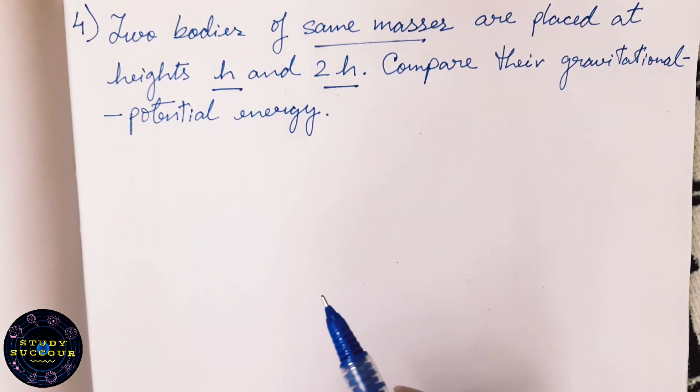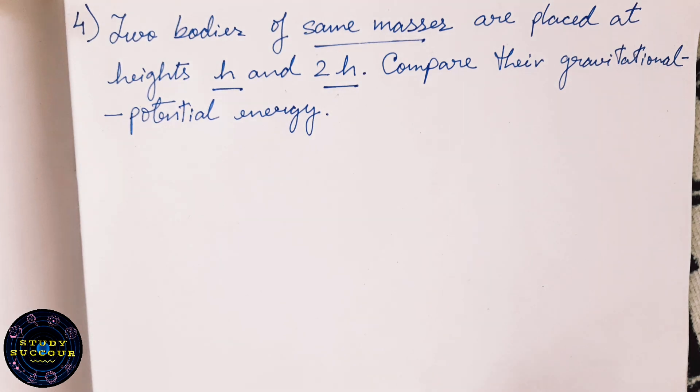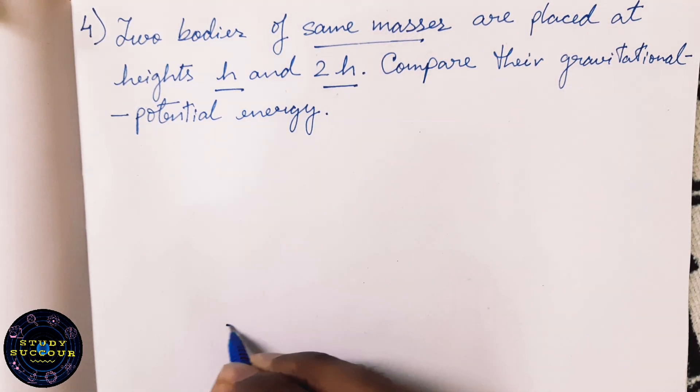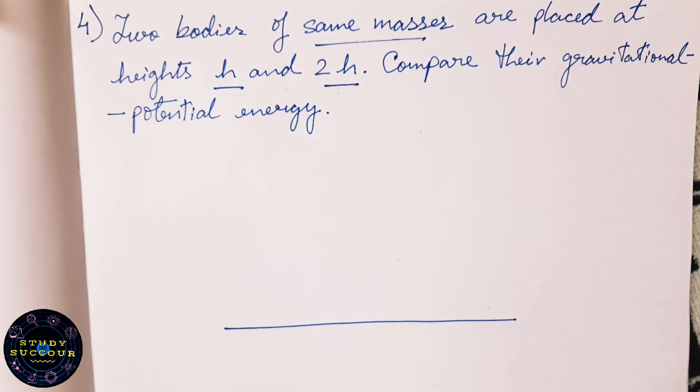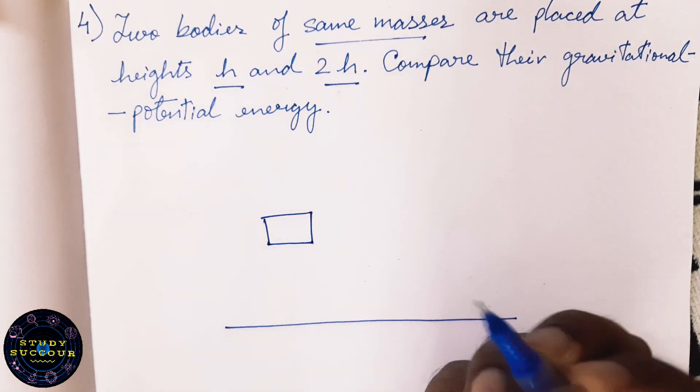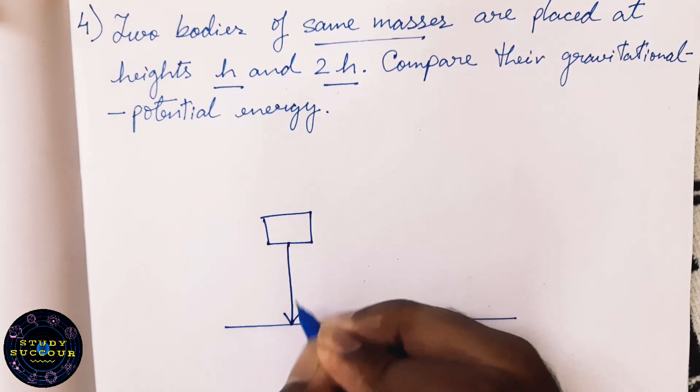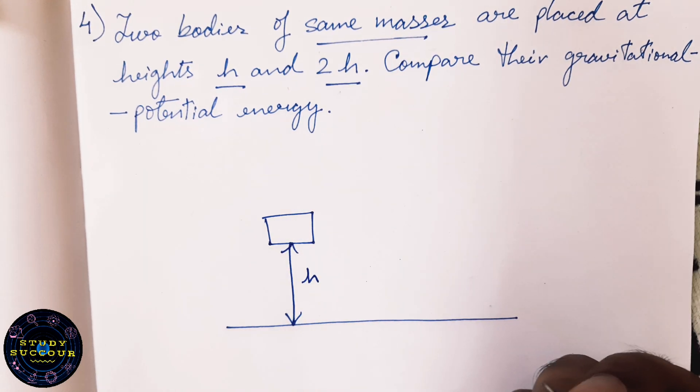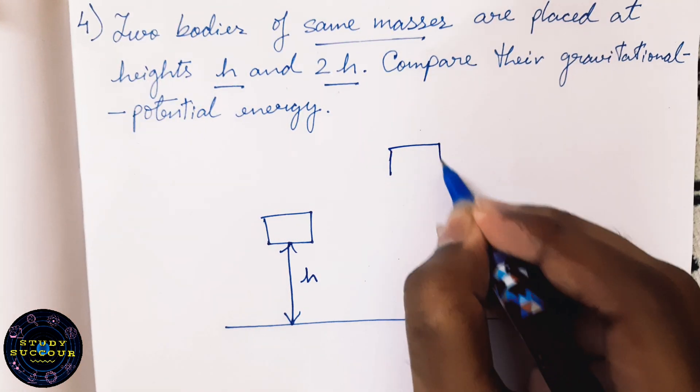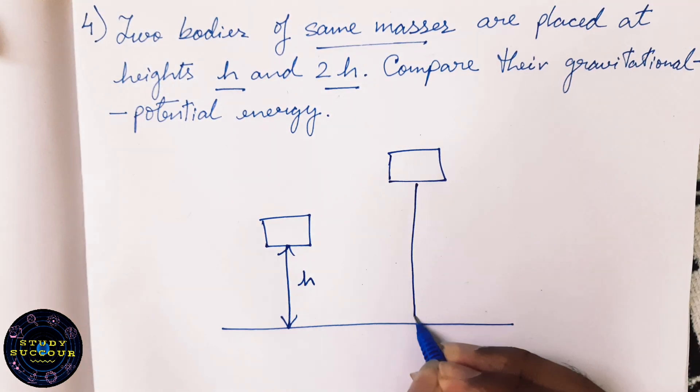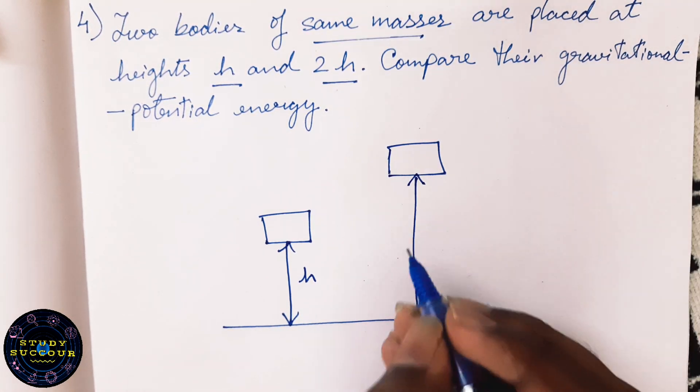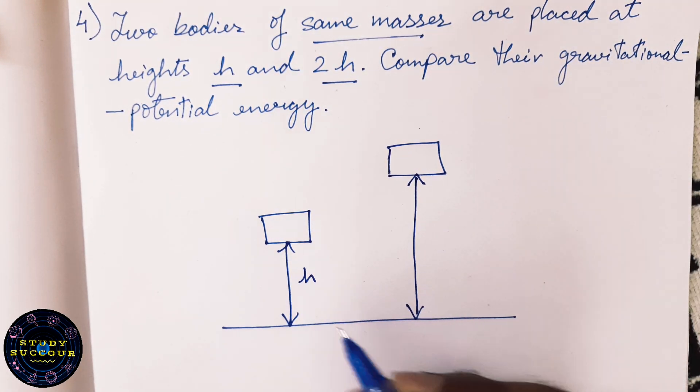Let's analyze this problem with the help of a figure. Suppose this is the ground level and this is the first body which is kept at a height of H, and this is the second body which is kept at a height double the height of the first body that is 2H or 2 times H.